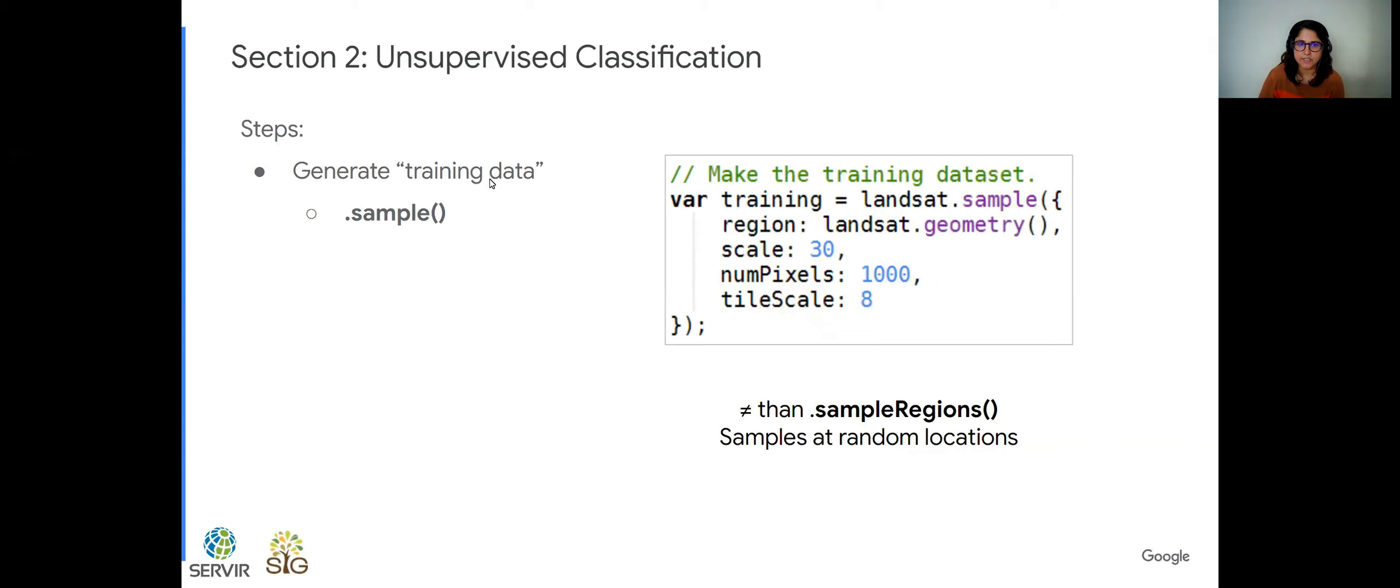Here are the steps. We'll first generate the training data. So we won't collect anything. For unsupervised, we don't have labeled training data. What we'll do, we'll just sample the image. And for that, we use the sample function. So it's different than the sample regions, because previously we wanted to sample specifically at the points that we have collected. Now we use the sample function, which samples the image at random locations.